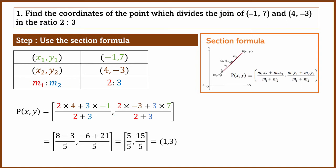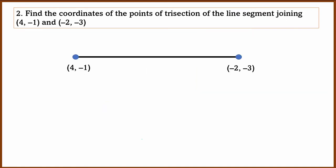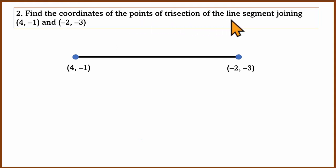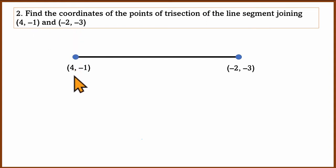Let's go to the second question, which is different. Find the coordinates of the point of trisection of a line segment joining (4, -1) and (-2, -3). So we have two endpoints and we need to find the trisection points.